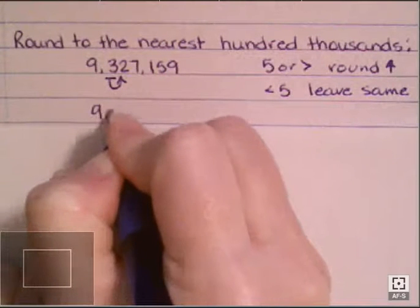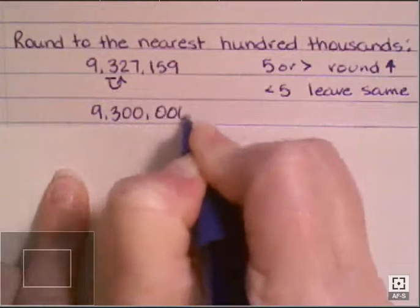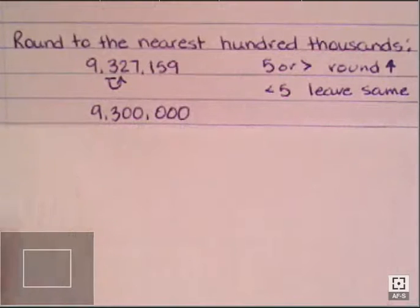So this is going to be nine, three, zero, zero, zero, zero, zero. So anything that's after the hundred thousands place, you're going to replace with zero. Now it is rounded to the nearest hundred thousands.